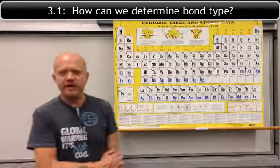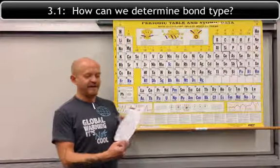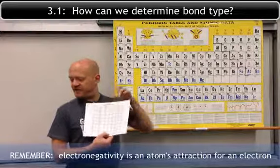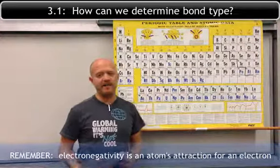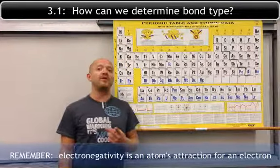Now, you're going to open up your reference table to table S, and you're going to look at the electronegativity values, which is this column right here. Now we're going to choose a few different examples of compounds that you may or may not see, and you have to determine whether they are ionic or covalent.